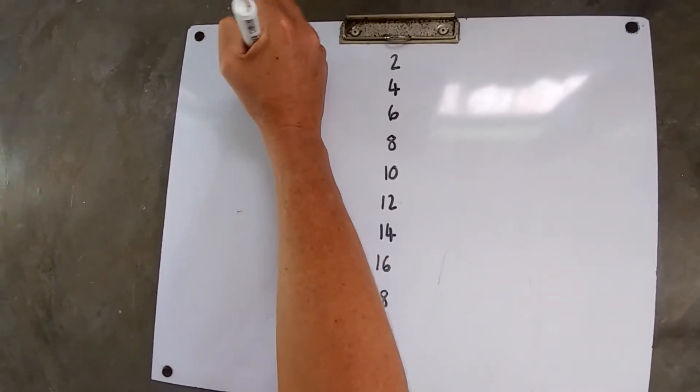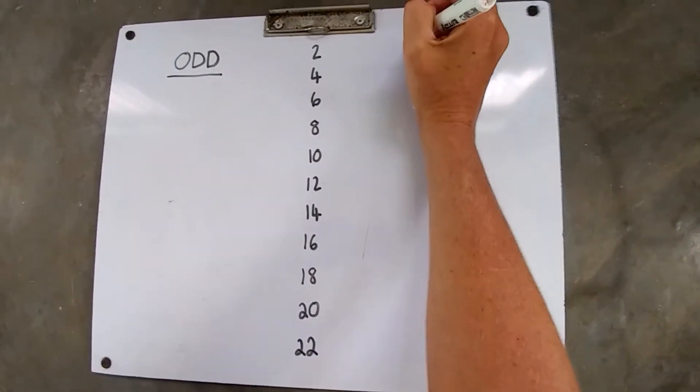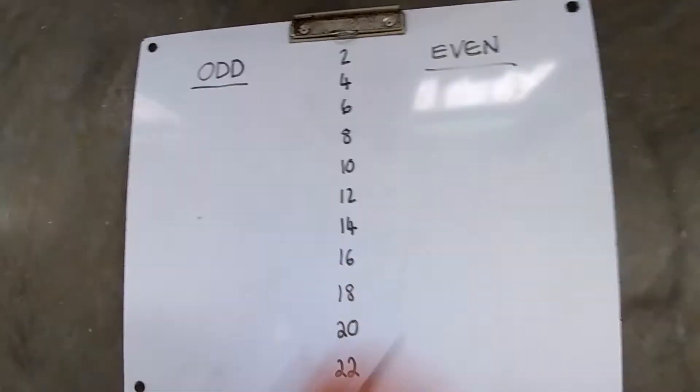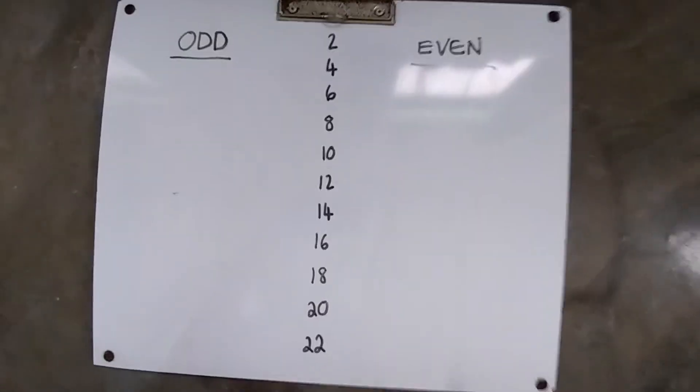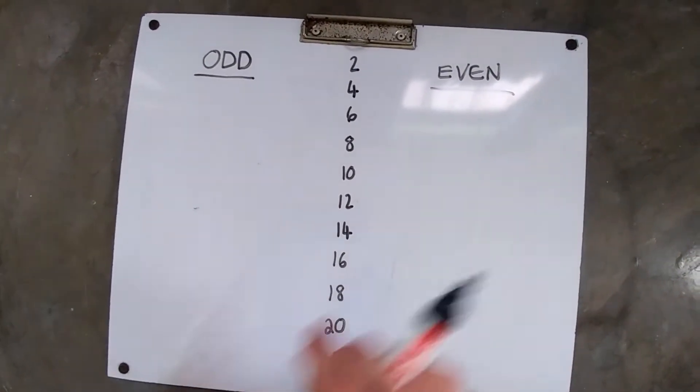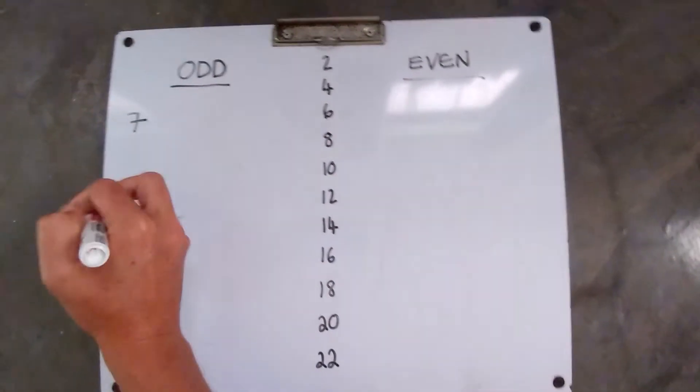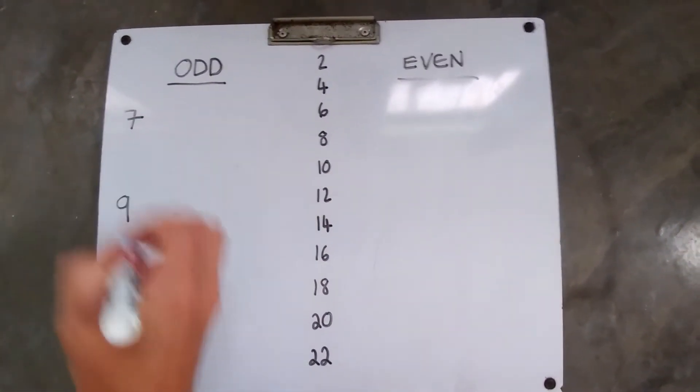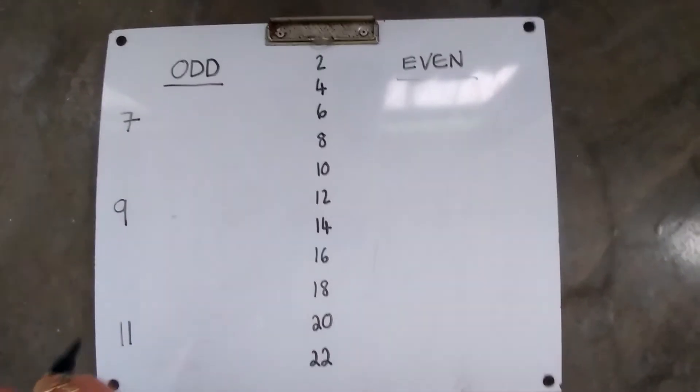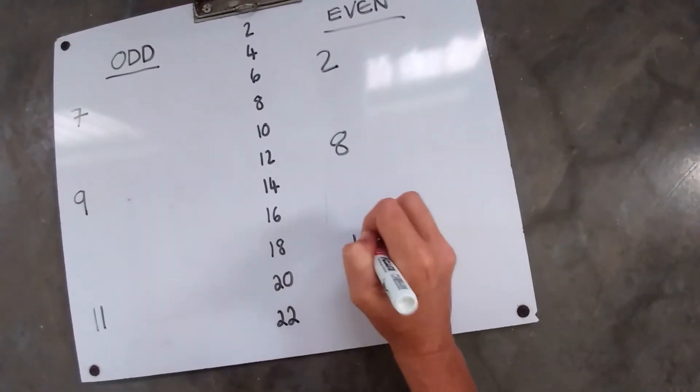Then over here we're going to write odd, and over here we're going to write even. And I want you guys to pick preferably a number under 10 that is odd and three numbers that are even. So let's start the game. Teacher Tammy is going to choose 7, 9, and let's go with 11 just for fun. Even let's do 2, 8, and 10.